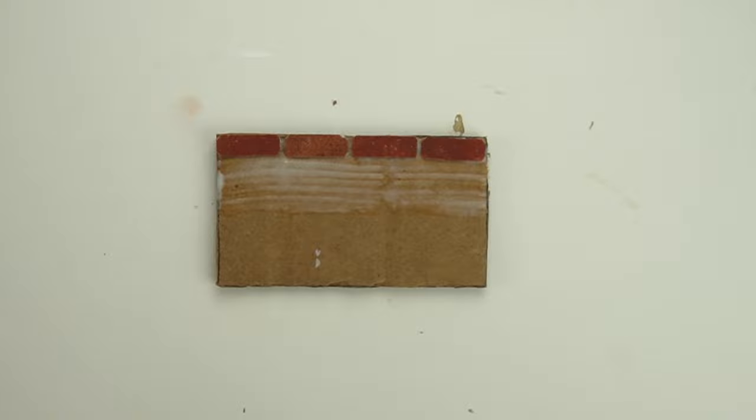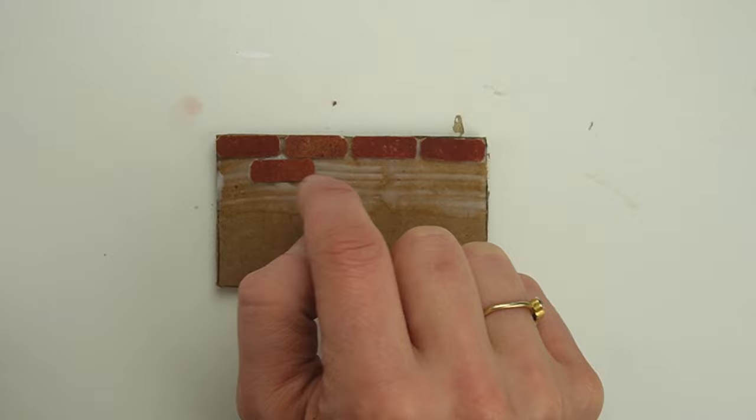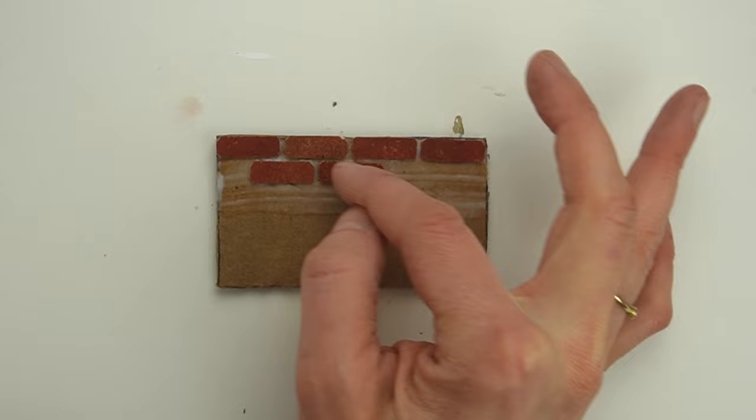I'm leaving a small gap between the bricks for the grout line. For the second row, I'm centering the brick underneath the grout line above it. I suggest working on a small section at a time, and add more glue if it begins to dry out before you can place your bricks.